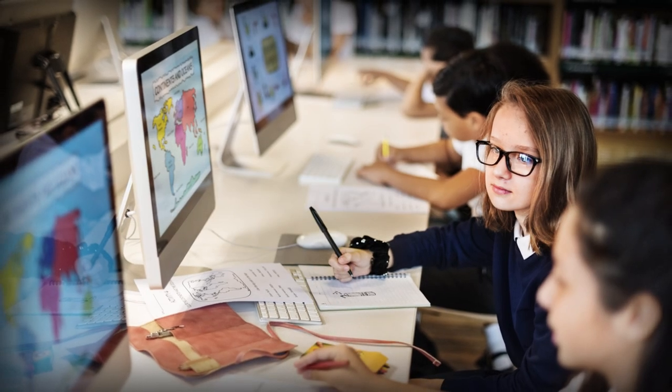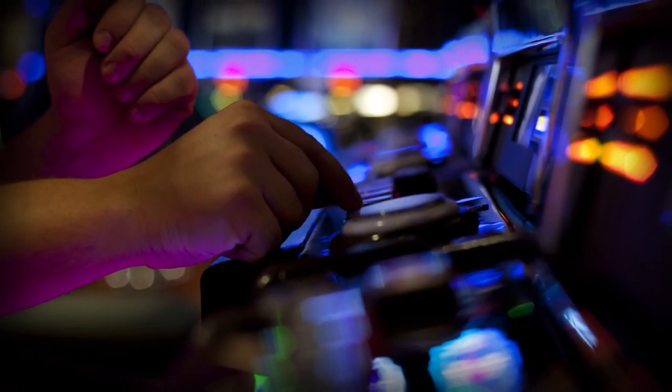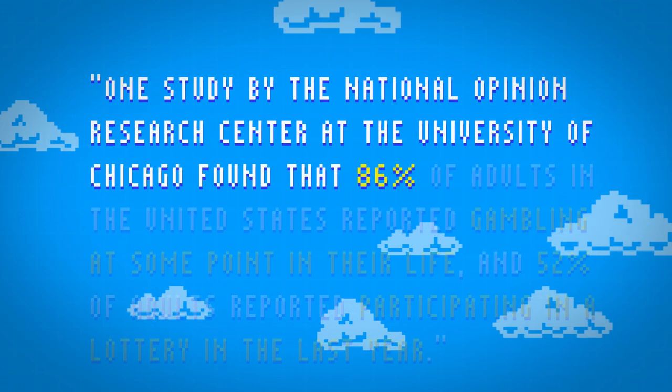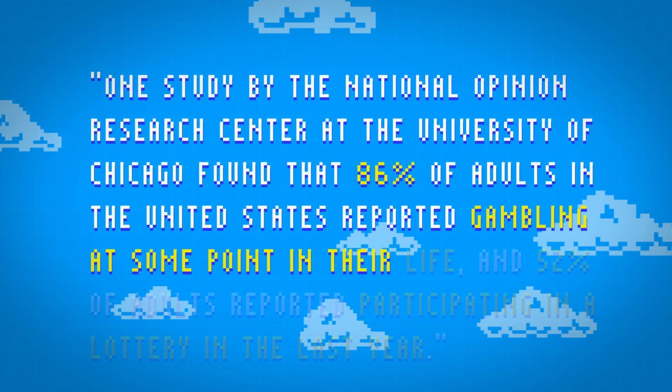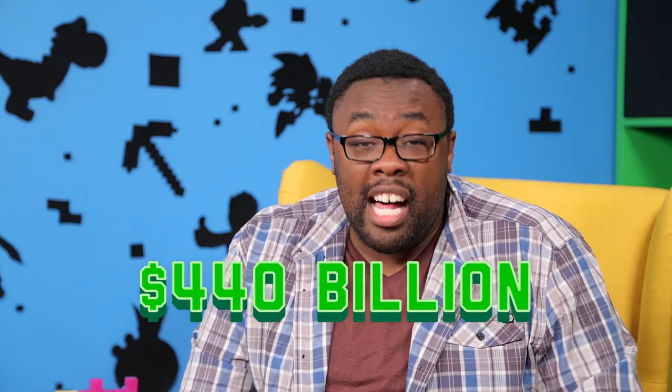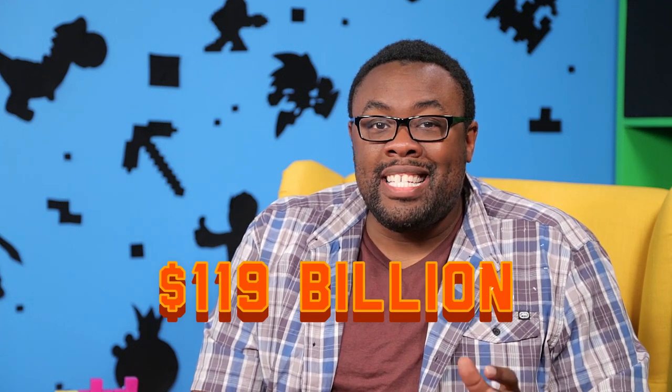This leaves states and municipalities addicted to gambling revenues in order to continue providing services. And as legal gambling expanded in the United States, a lot of people have taken it up. One study by the National Opinion Research Center at the University of Chicago found that 86% of adults in the U.S. reported gambling at some point in their life, and 52% of adults reported participating in a lottery in the last year. These gamblers bet a lot of money and lose a lot of money. According to The Economist, the world's gamblers lost a total of $440 billion in 2014. American gamblers lost the most, giving up $119 billion in legal wagers. And those numbers are just for casinos and other wagering businesses — if you count the money spent on lotteries, some estimates of worldwide legal gambling losses are as high as $10 trillion a year.